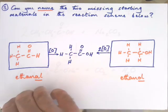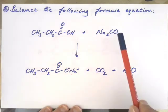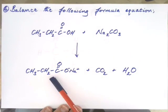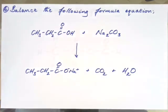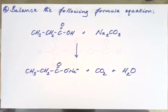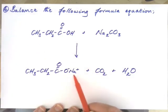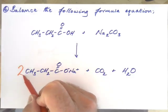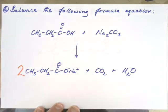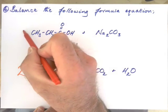Question number four. I'd like you to balance the following equation, please — the reaction of propanoic acid with sodium carbonate to give sodium propanoate, carbon dioxide, and water. All you have to do is balance it like any other equation. Pause the video, have a think, and balance it. The key is that there are two sodiums in sodium carbonate, so you'll need two sodium propanoate molecules, and therefore two propanoic acids as well.